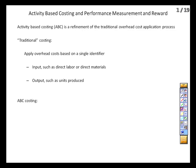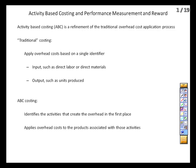ABC, on the other hand, goes deeper and asks: we spent a bunch of money on these overhead costs — why did we spend that money? What are the activities that we are doing that's causing this overhead to be incurred? And once we know that, we can apply the overhead to various products based on how much they rely on those activities.